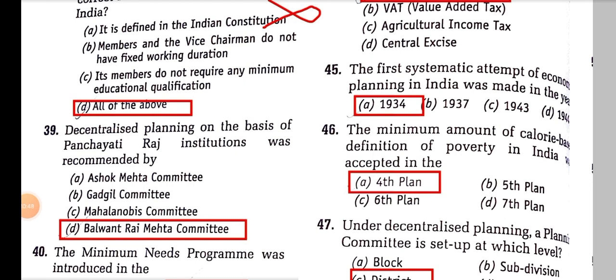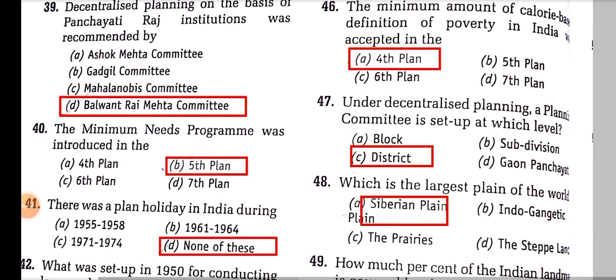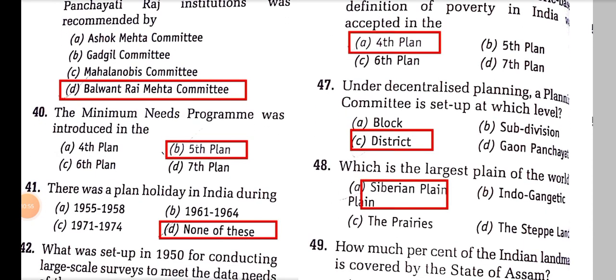The minimum calorie-based definition of poverty in India was accepted in the Fourth Plan. Under decentralized planning, the planning committee is set up at the district level.